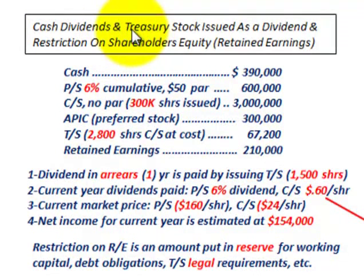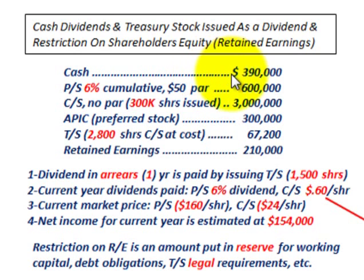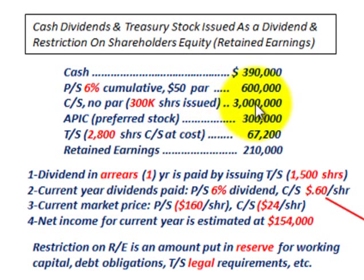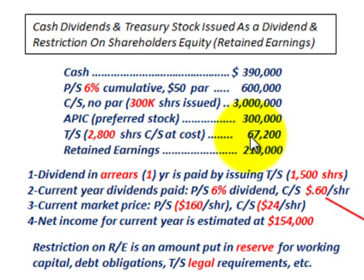We're going to be going over cash dividends and treasury stock issued as a dividend, and how it sets up a restriction on shareholder's equity — specifically retained earnings — when treasury stock is issued as a dividend. For our example, we have cash at $390,000, preferred stock 6% cumulative at $50 par for $600,000, common stock with 300,000 shares issued and outstanding for $3 million, additional paid-in capital for preferred stock at $300,000, treasury stock holding 2,800 shares of common stock at cost of $67,200, and retained earnings of $210,000.